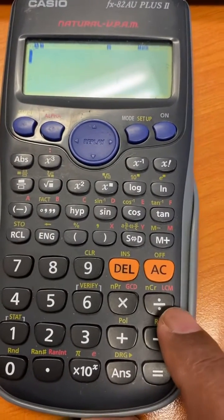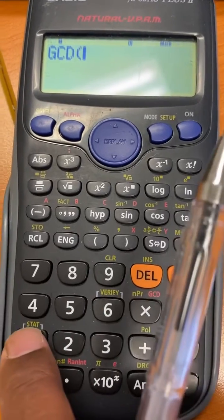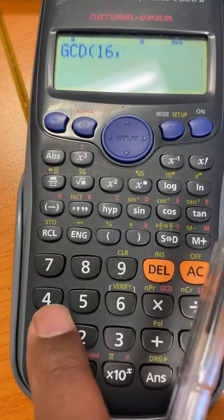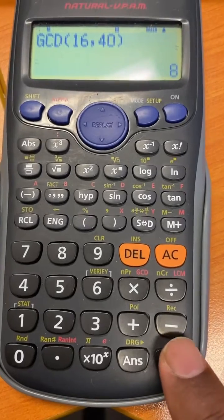For 16 and 40, let's say alpha key, GCD, have 16, then shift, press comma, maybe 40, and close the bracket here and then equal to sign.